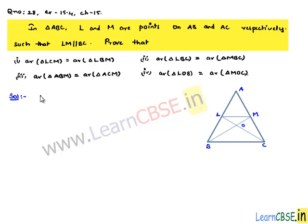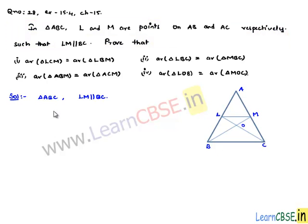Given that in triangle ABC, LM is parallel to BC. Let us consider triangle ABC in which LM is parallel to BC. Let us join BM and LC, and they intersect at O.